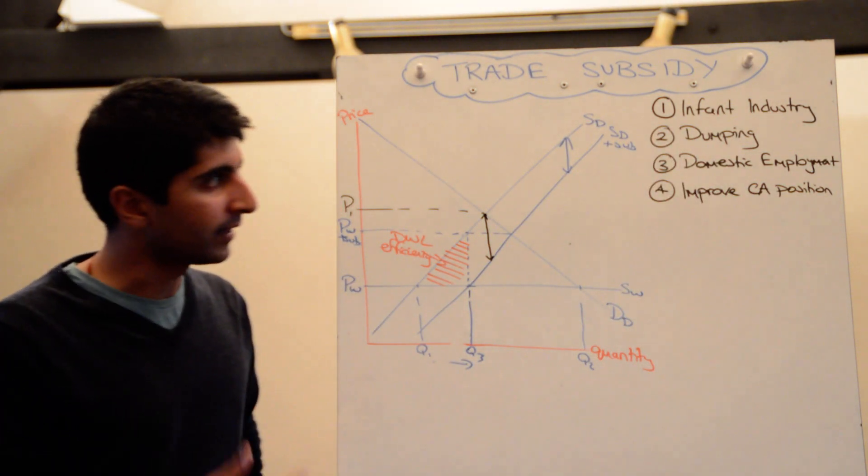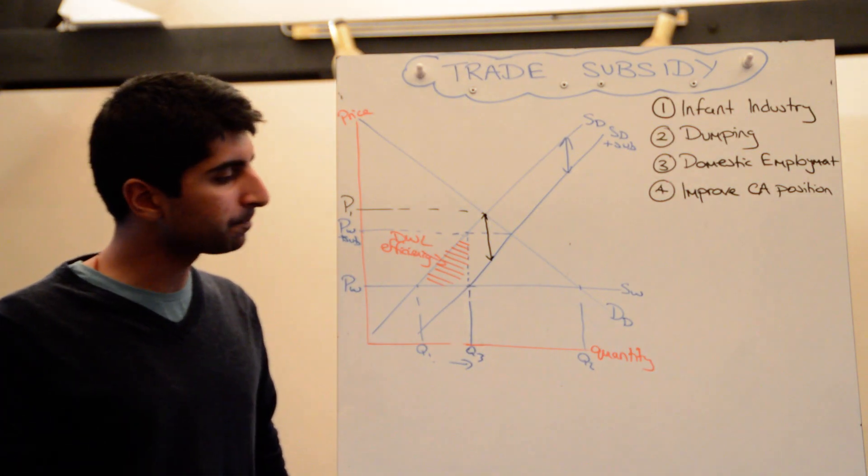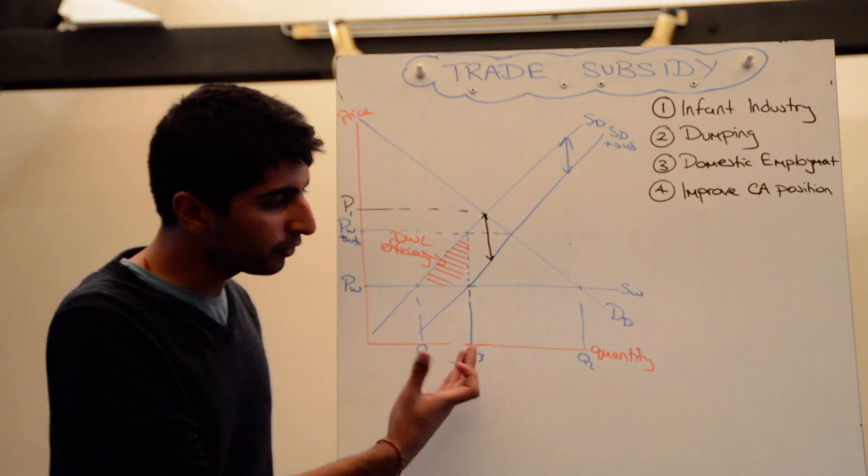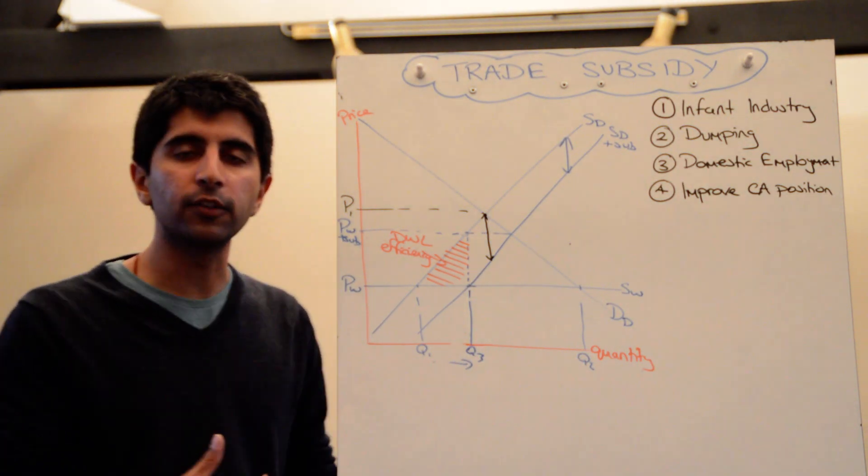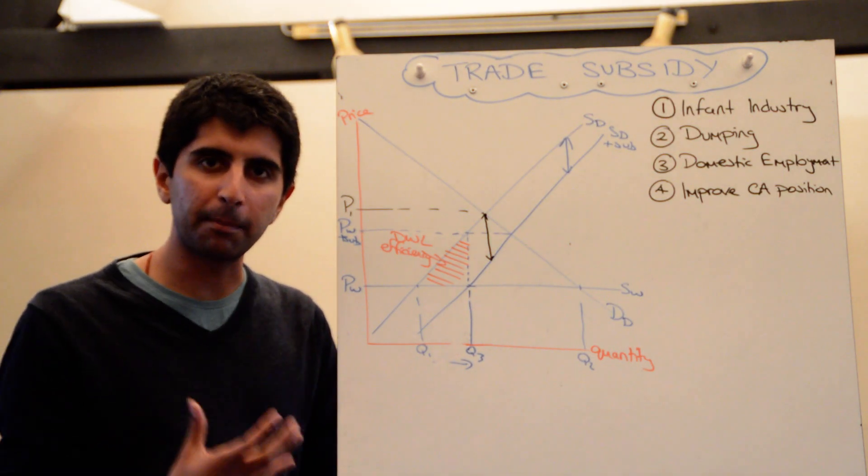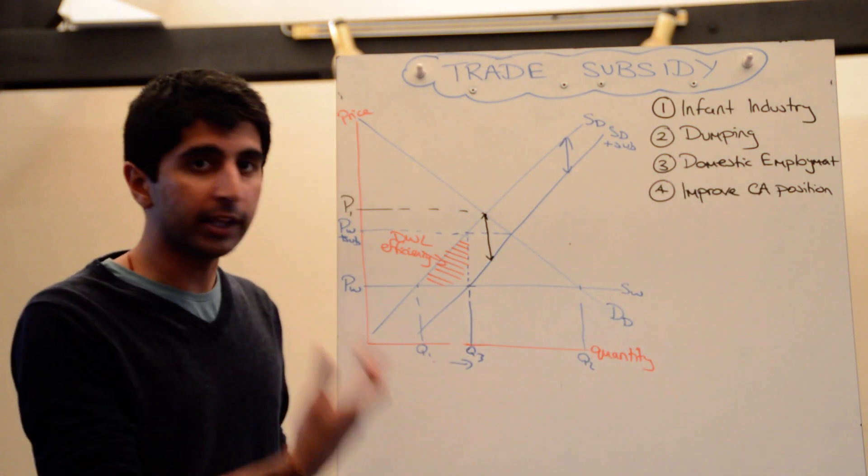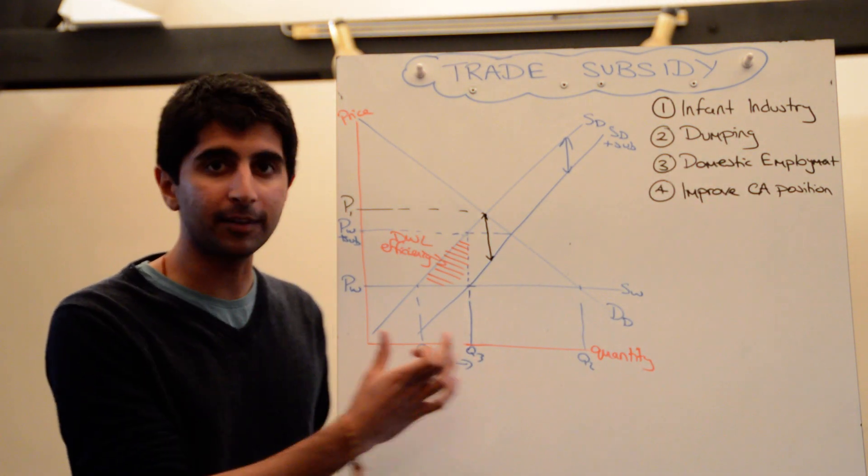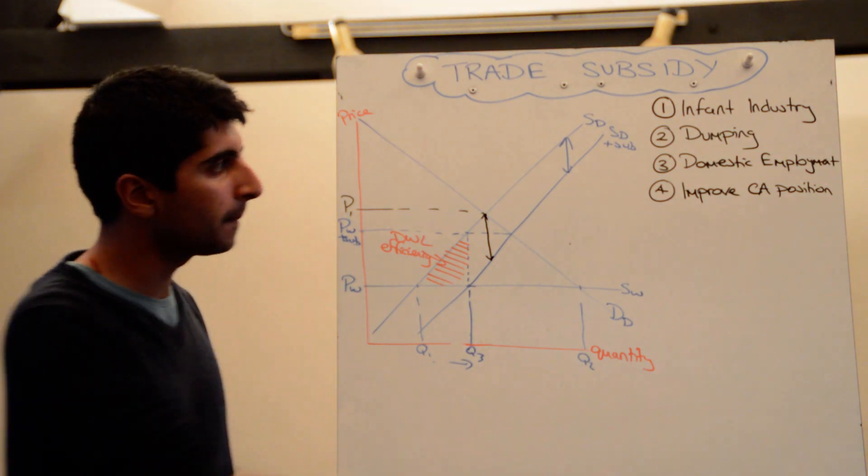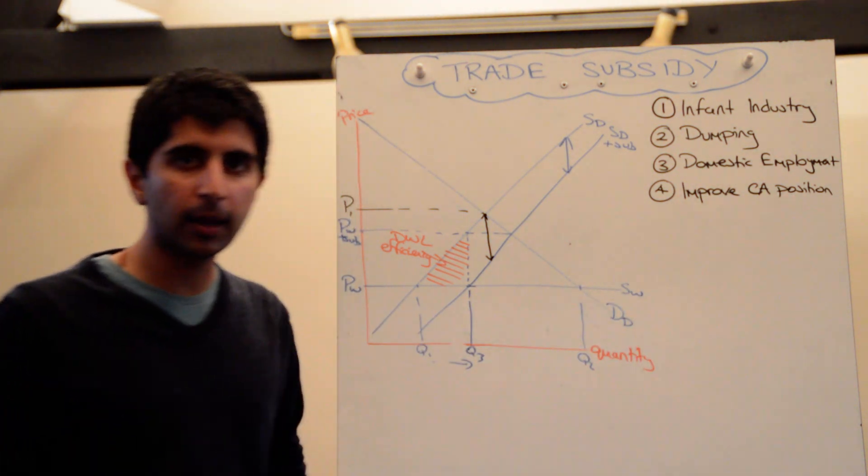The argument of dumping is accounted for with a trade subsidy. So with more supply, there are less imports coming in. So the chance of suffering from dumping is less because there are less imports now. Domestic employment, you would hope, will increase, but at worst will stay the same now that domestic suppliers are increasing their quantities. And the argument of improving the current account position...